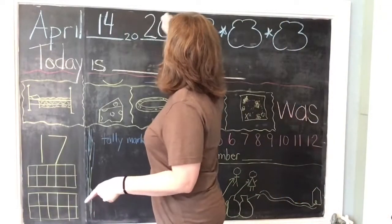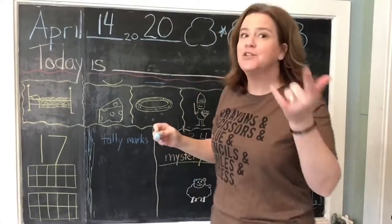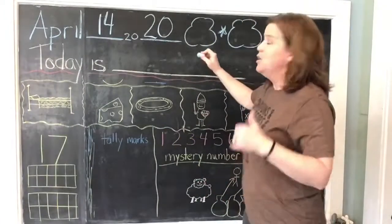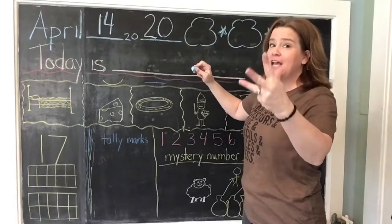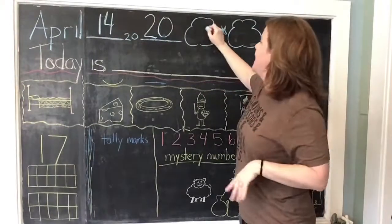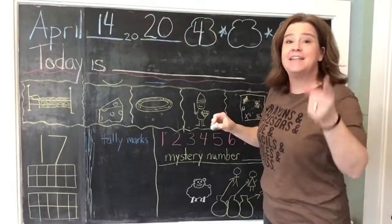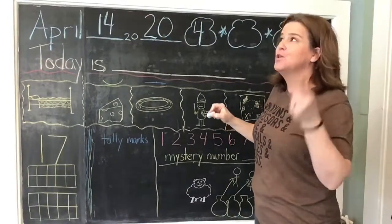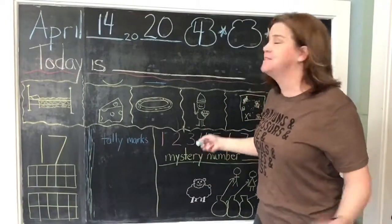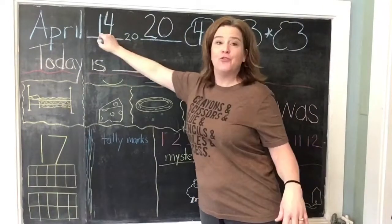So it is April 14th, 2020. And that makes our easy peasy date — January, February, March, April — so we have 1, 2, 3, 4. We have the 4th month and the 14th day. Look at that! They both have 4s in them — the 4th month and the 14th day.